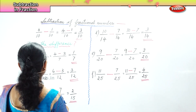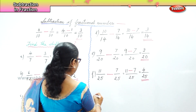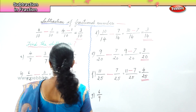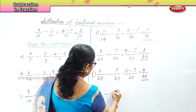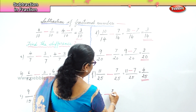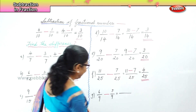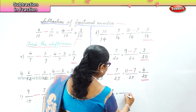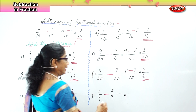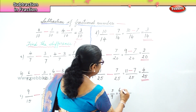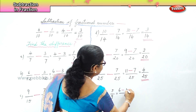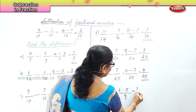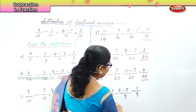Let's do another sum: 6 by 9 minus 5 by 9. Our common denominator is 9 and we have to take away 6 minus 5. What is 6 take away 5? We get 1. So 1 by 9 — and that gives us the answer.